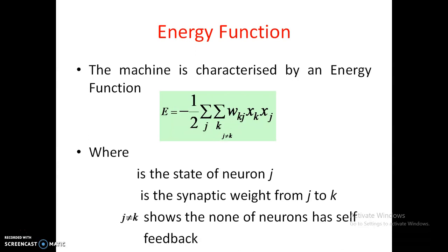The synaptic weight w_kj shows that there is no self-feedback — it can give feedback to any of the neurons except its own. x_j is the state of the neuron at j, and w_kj is the synaptic weight from the jth neuron to the kth neuron. Since j is not equal to k, there is no self-feedback in the Boltzmann machine.